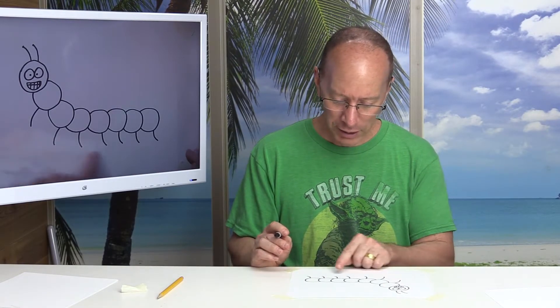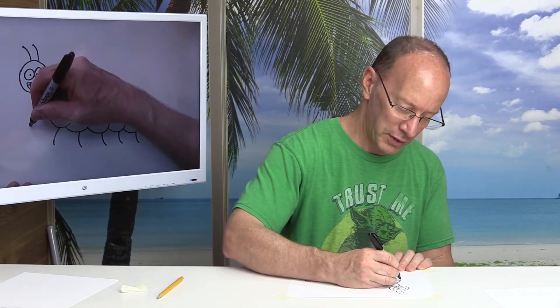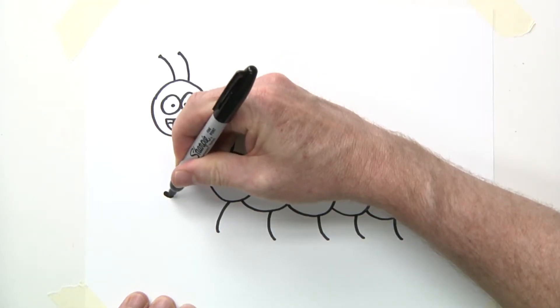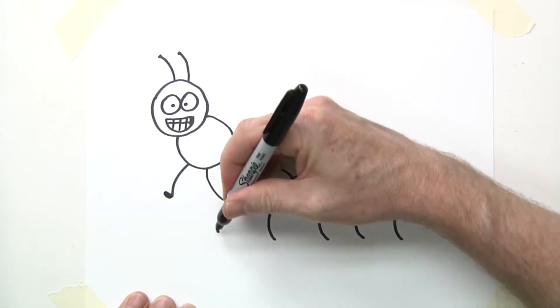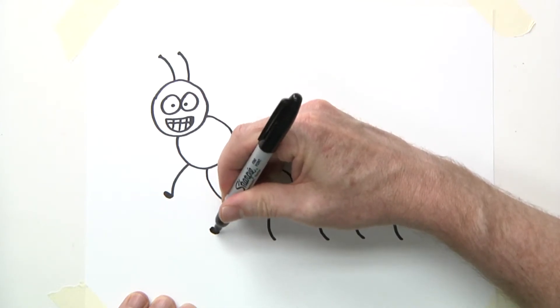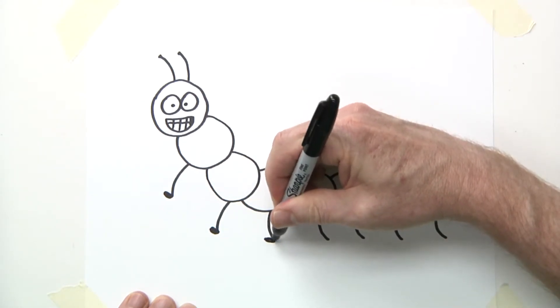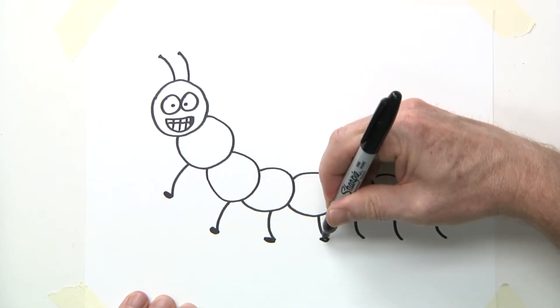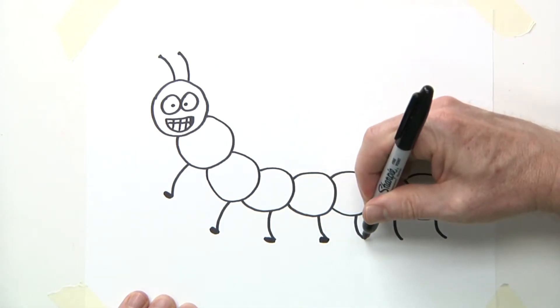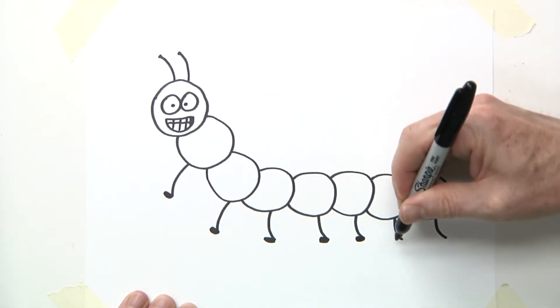So right now let's go ahead and put some feet on that. And basically I'm just kind of coloring in a short oval for the foot. Just like that. And if you want to draw something different, that's fine.